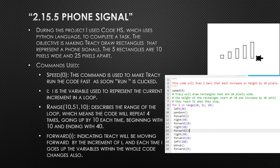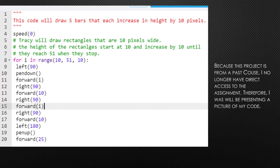Project number two is called the Phone Signal. During this project, we were tasked to make the character Tracy draw five rectangles that are 10 pixels wide, 25 pixels apart, and increased by 10 pixels each time. Here is a list of commands used in the code: the speed command, the i variable, the range, the for loop, and the turning commands. All of these commands help make Tracy move. Unfortunately, I will not be able to upload a demo of this project because it was created last year during a course in CodeHS and I'm not able to revive that project, so here is a screenshot of the code that I have saved.